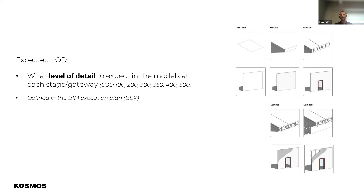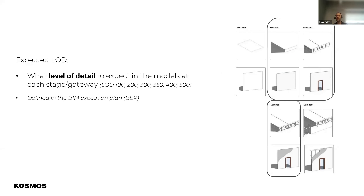Between stage three and stage four it could be LOD 200 to 350. We'd expect at stage four that everyone catches up and we're getting a minimum of LOD 350 from all disciplines based on the BIM execution plan. Taking electrical as an example, we're most likely not going to get cables modelled. We might get high-voltage busbars modelled because of their size and cost impact, but other cables — security, IT — none of that will be modelled. We need to really understand that.